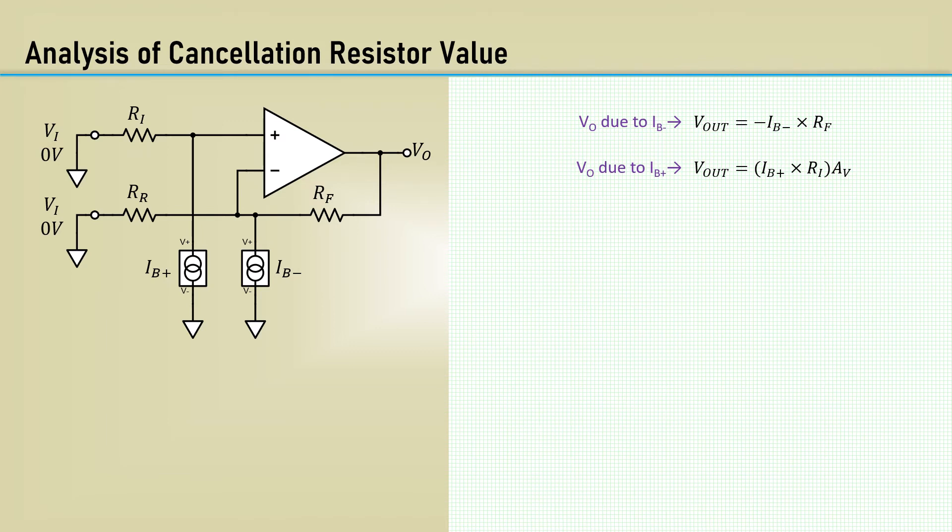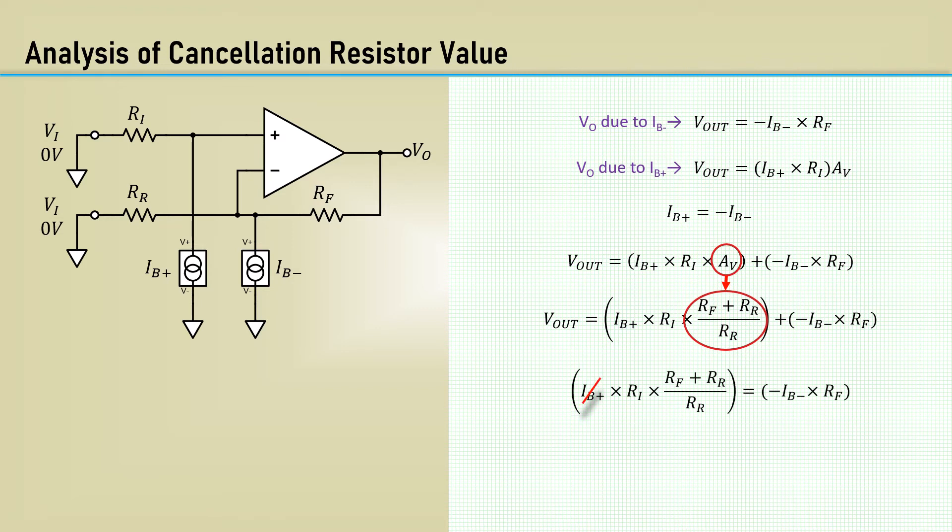You can therefore adjust RI to nullify the effect on the bias current into the negative input. It uses the assumption that the positive and negative input bias currents are the same, and VI equals zero. You can easily calculate Vout by noting that we have a voltage adder circuit. The output is the sum of these two contributions. I'm substituting the gain programming resistors in place of AV, which you should recall from the abstraction video. After setting both contributing errors equal to one another, we can cancel the two input bias currents, using the assumption that they are equal. Rearranged, this looks like the familiar parallel resistor formula.